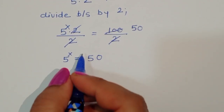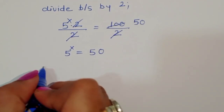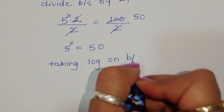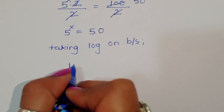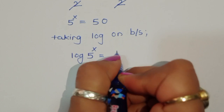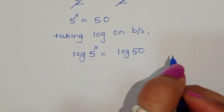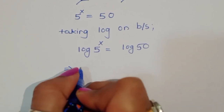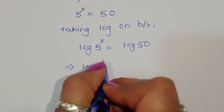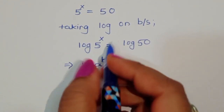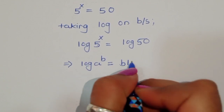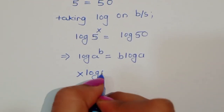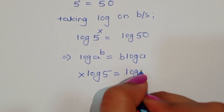Now we use logarithm to solve this equation. Taking log on both sides, we get log of 5^x is equal to log of 50. Using the formula log(a^b) = b·log(a), we can write x·log(5) is equal to log(50).